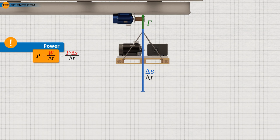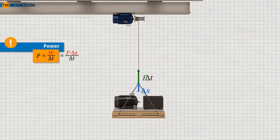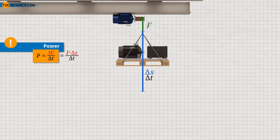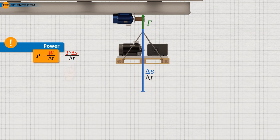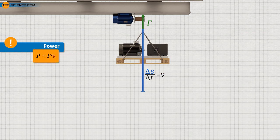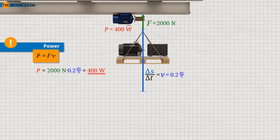By definition, work is the product of the force and the distance over which the force acts. If the winch pulls the load by distance delta S with force F within time delta T, the power is calculated accordingly. Since the quotient of distance traveled and time required equals the speed at which the load is lifted, the mechanical power P required to move a body at constant speed v with constant force F is the product of the two quantities: P = F × v.